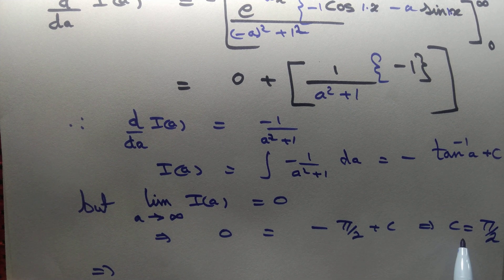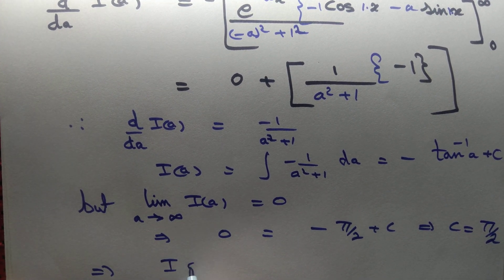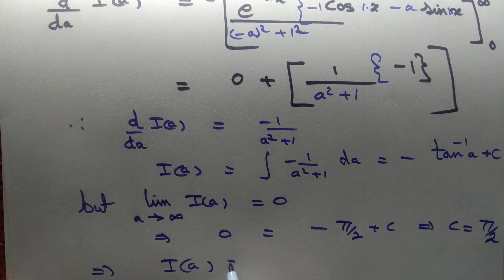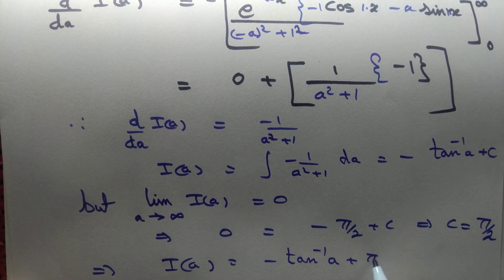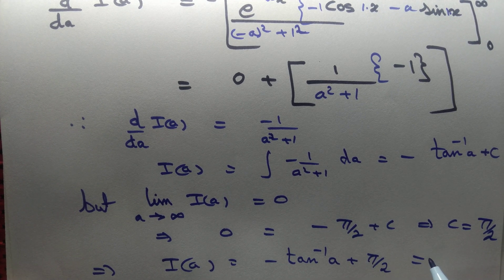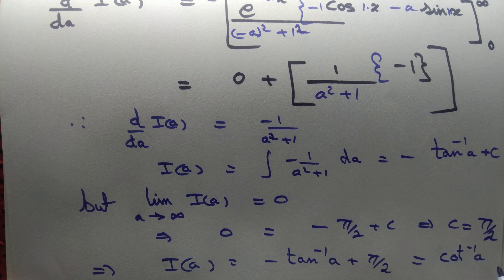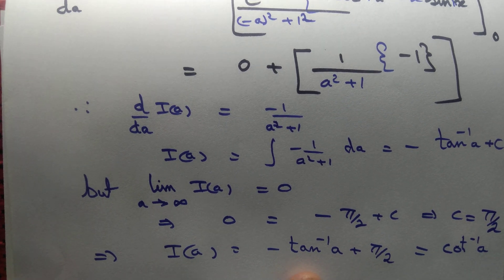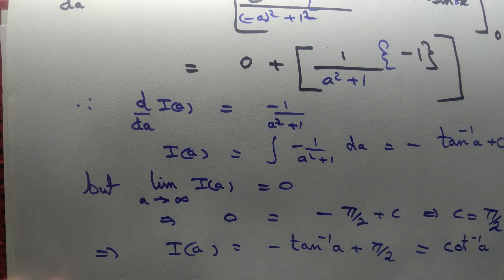Putting that value of the constant into the equation: I(a) = −tan⁻¹(a) + π/2, which is π/2 − tan⁻¹(a), and that equals cot⁻¹(a). So we have computed the integral to be equal to cot⁻¹(a).